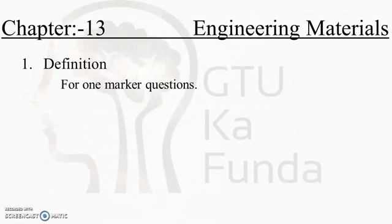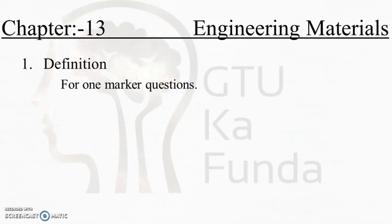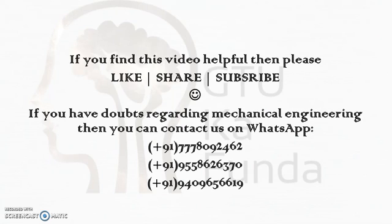Engineering materials will be helpful for subjects like Material Science and Metallurgy, and Strength of Materials. Go through this chapter — they can ask seven-mark questions with several definitions on engineering materials. They may ask for seven different definitions for a seven-mark question, or split into four marks and three marks, or ask as one-mark questions. So go through this chapter carefully.